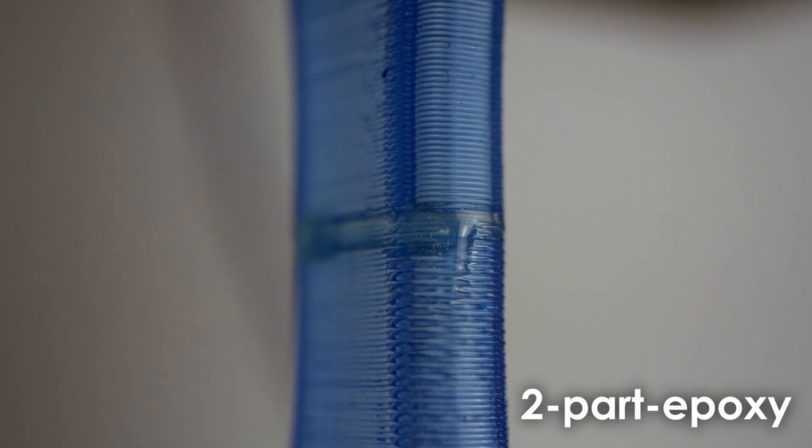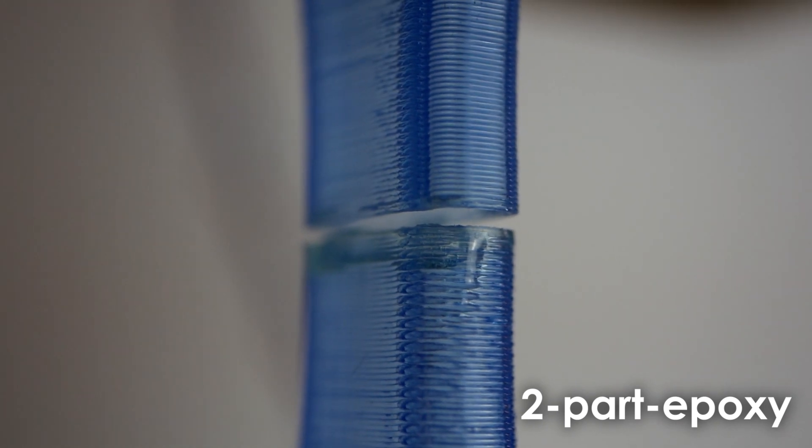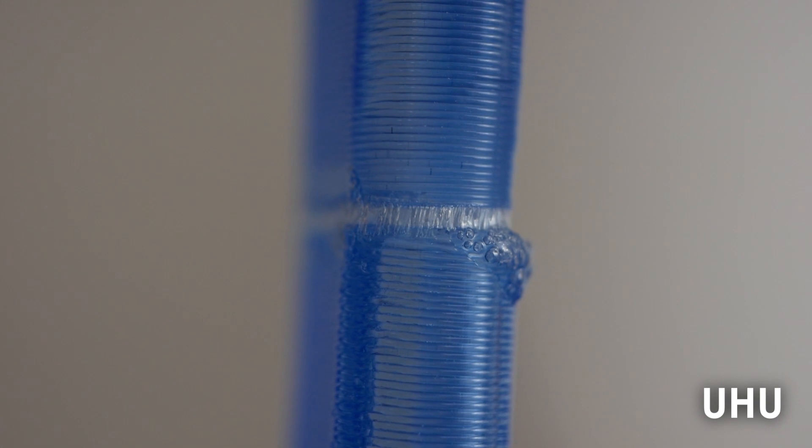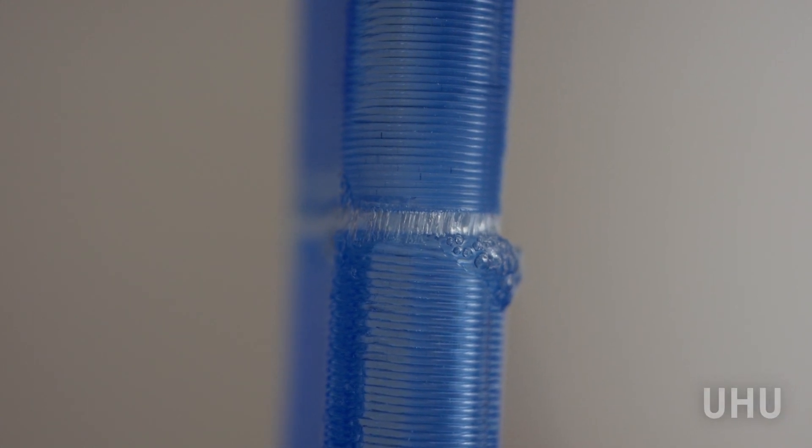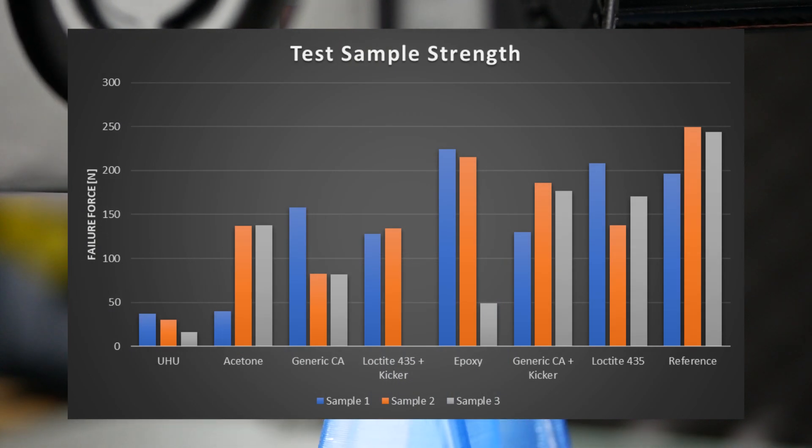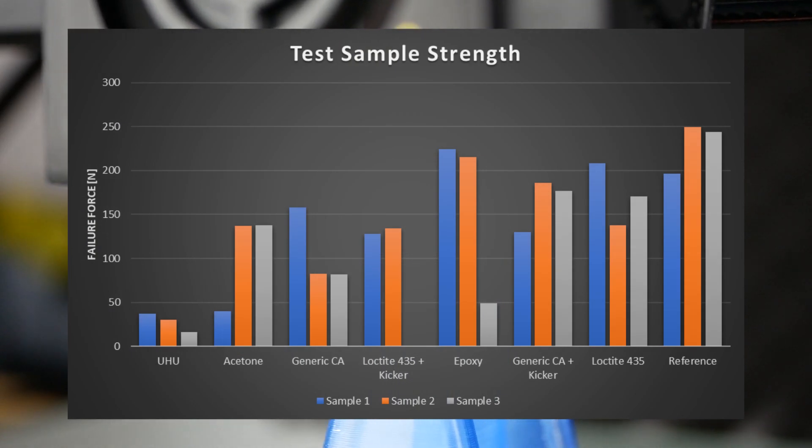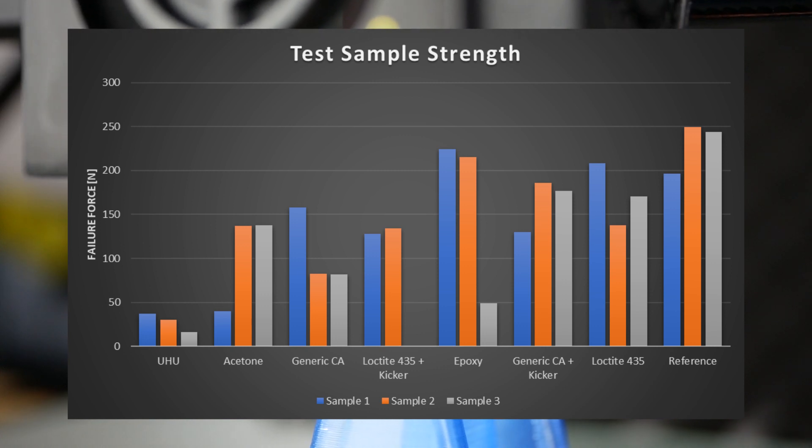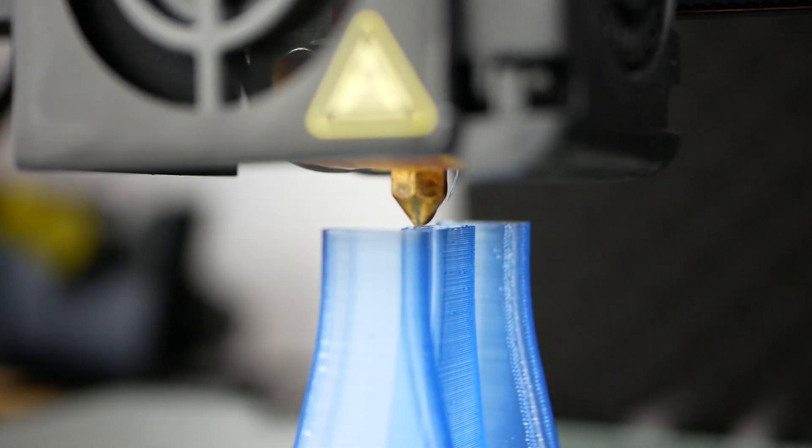First all of the samples broke in the seam which makes the results more consistent but also shows that this location will remain the weak point. The Uhu glue performed the worst and it felt like the parts were only held together by some bubble gum. The acetone glued parts showed decent strength and I even have already seen better results with longer dipping times but where the parts deformed more. So it would work but I think it's not the perfect solution for our problem.